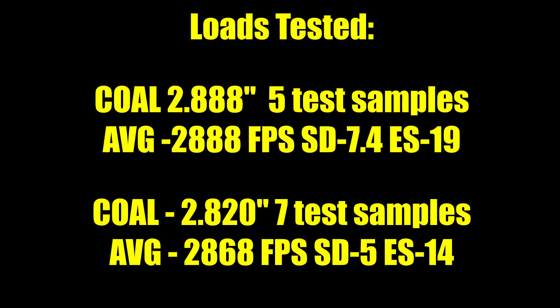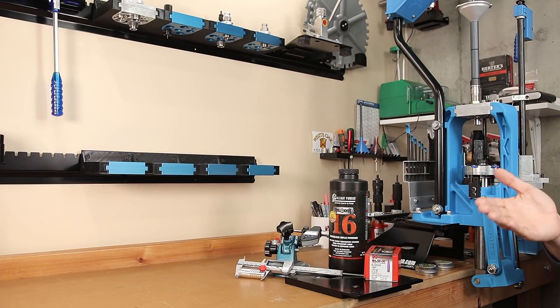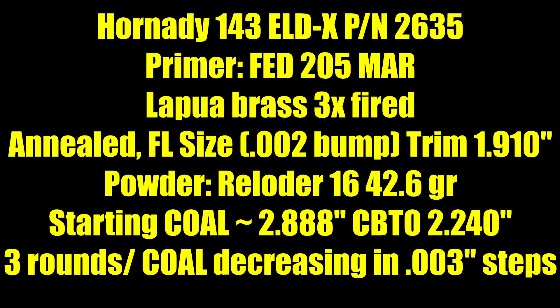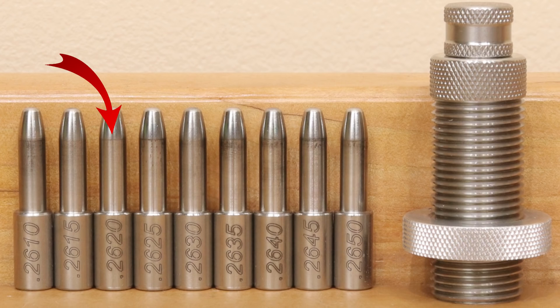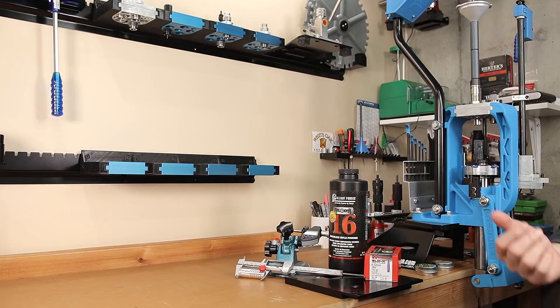Our longest cartridge overall length with a CBTO of 2.240 inches yielded us an average velocity of 2888 feet per second, an extreme spread of 19, and a standard deviation of 7.4 over 5 rounds sampled. I tested 7 rounds at that shorter length of 2.820 inches. Our velocity dropped to 2868 feet per second, but our good standard deviations and extreme spreads were preserved because our SD was only 5 and our extreme spread was only 14. So we did lose about 20 feet per second with the change in cartridge overall length, but the statistics are better, and we had a slightly larger sample size. It's clear to me at this point that this load should produce some acceptable standard deviations, and so this is why we move forward with today's test. So getting into our exact load details for today, we're using 3x fired Lapua brass, annealed, full length size, the neck diameter set with a 0.262 inch expander mandrel made by 21st Century Reloading. Fed 205 Match AR, again 42.6 grains of Alliant Reloader 16.